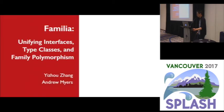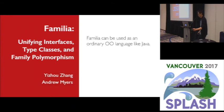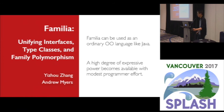In conclusion, Familia packs a lot of polymorphism and extensibility in a lightweight package. It can be used as an ordinary OO language like Java where no advanced polymorphism is required, and with modest programming effort a high degree of expressiveness becomes available. We have formalized the key aspects of Familia in a core language called Federated Familia and proved its type safety. We look forward to exploring efficient implementations of Familia in the future.